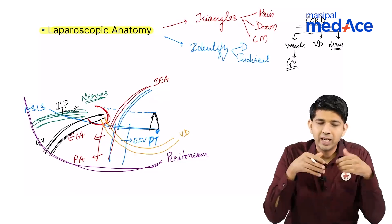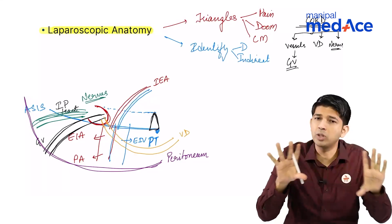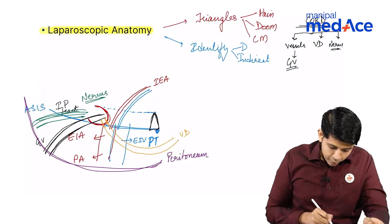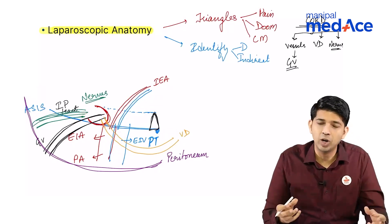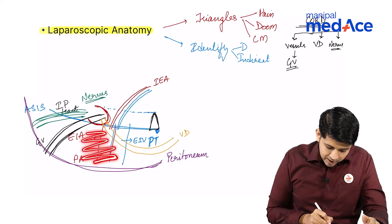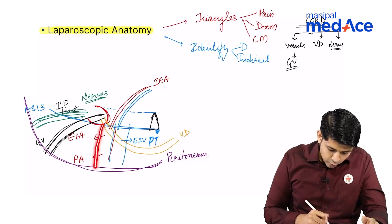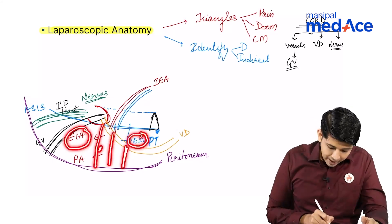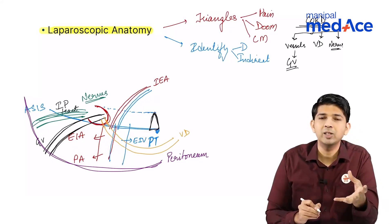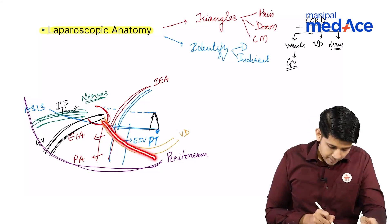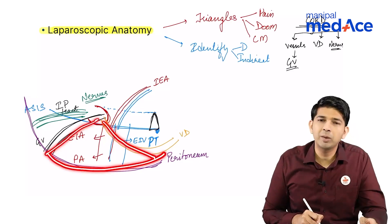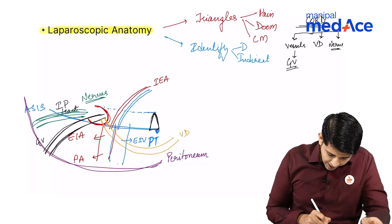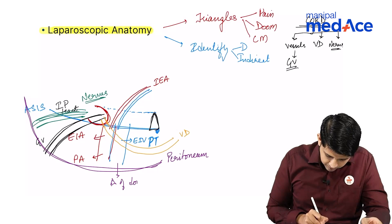In laparoscopic surgery, when I see from the inside, I have to dissect all these areas in order to put the mesh. When putting a mesh, I have to dissect out and skeletonize the cord structures. I have to be very careful in the area between the vas deferens and the gonadal vessels, because there are two important blood vessels there — the external iliac artery and the external iliac vein. If I damage them, I am going to have torrential bleeding. This area is therefore called the triangle of doom.